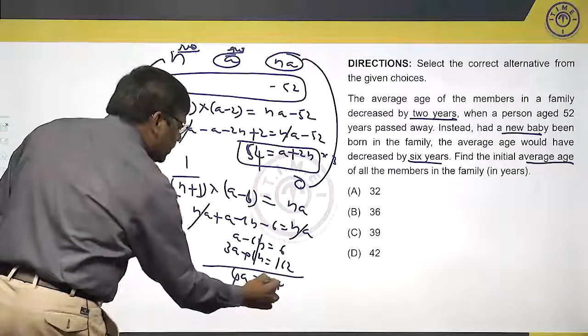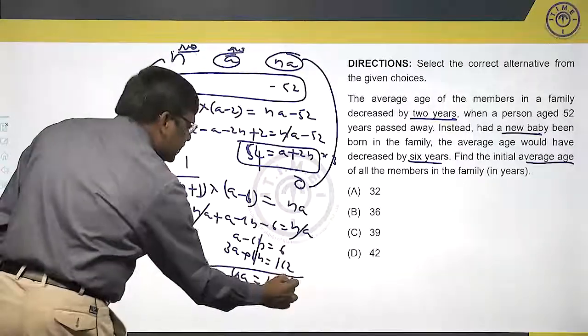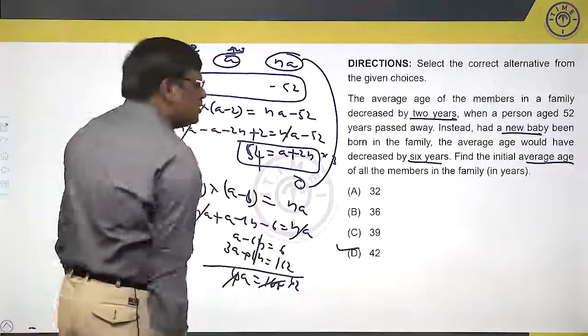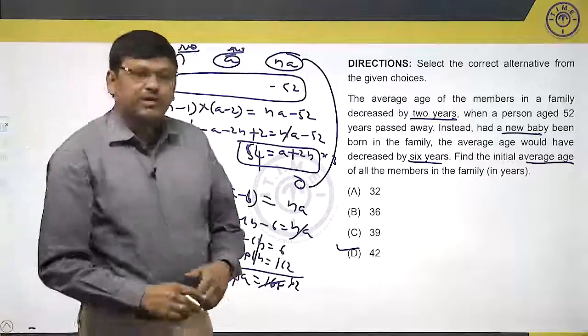a equals to 4 42s, a equals to 42. So, my answer should be 42.